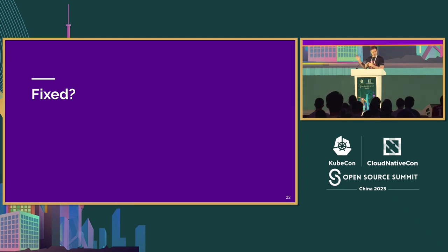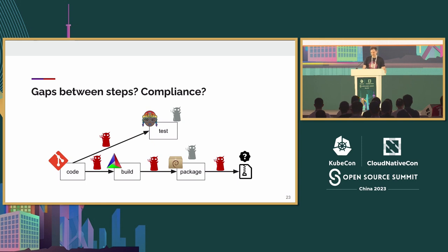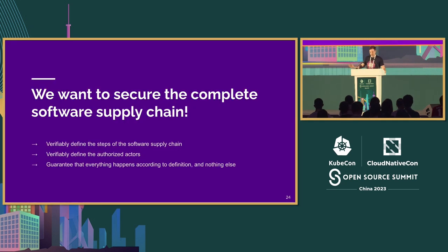With all these point solutions, a natural question is: have we fixed the problem? The answer is really no, because you don't know that these steps were all correctly followed, done by the right people, or that you're resistant to an attacker who has compromised your infrastructure. The goal of the Intoto project is working to secure the complete software supply chain — verifiably defining the steps, defining who the actors are (called functionaries), and guaranteeing everything happens as defined and nothing else occurs.